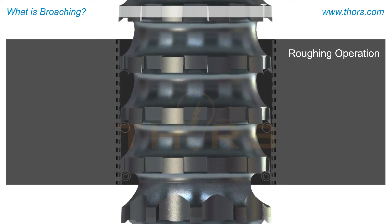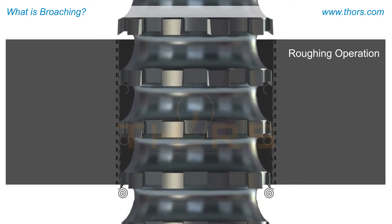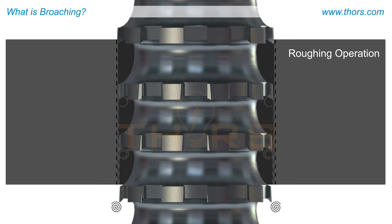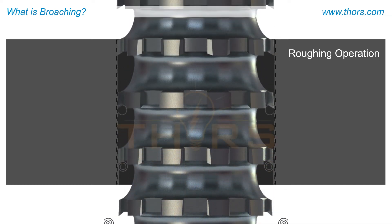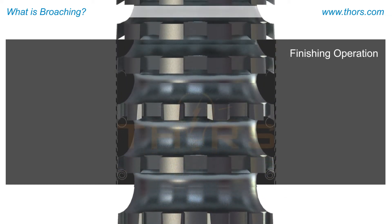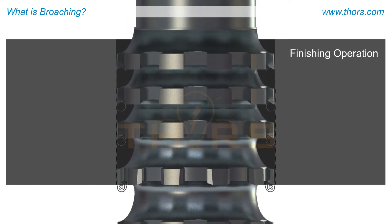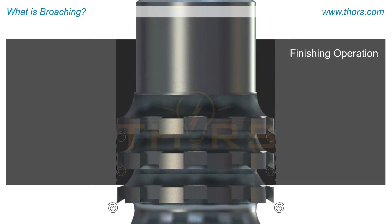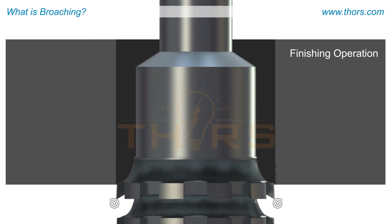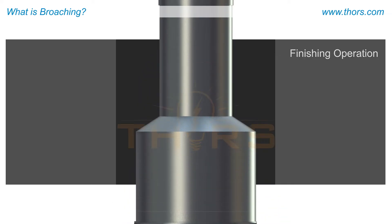Both roughing and finishing cuts can be achieved in a single pass of the broaching operation, which enables the material to be removed at a faster rate and with high precision.